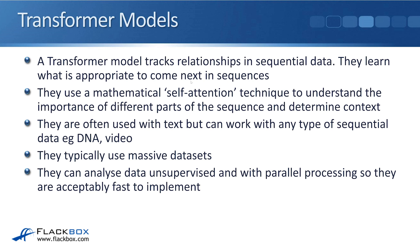Transformer models are often used with text but can work with any type of sequential data — for example, DNA for genetics research, amino acids for drug development, and also video. They typically use massive datasets to build full understanding. They can analyze data unsupervised, so a human operator does not need to label the data beforehand. They can also do parallel processing, processing multiple sequences at the same time, which makes them acceptably fast to implement.